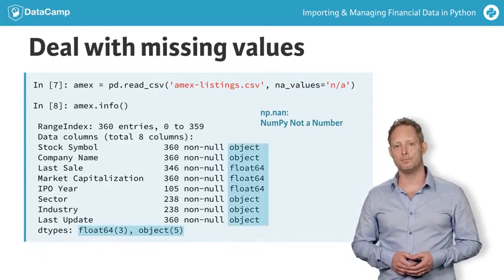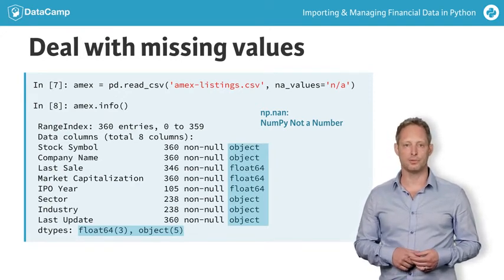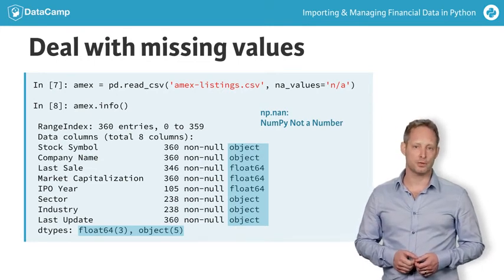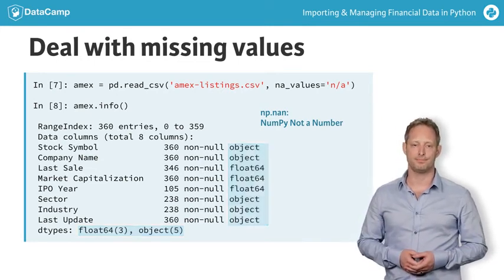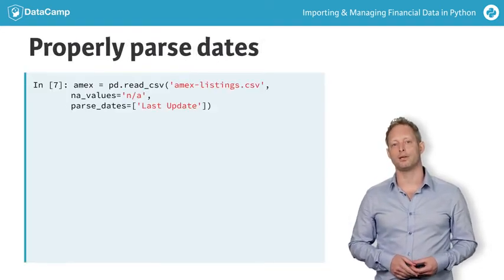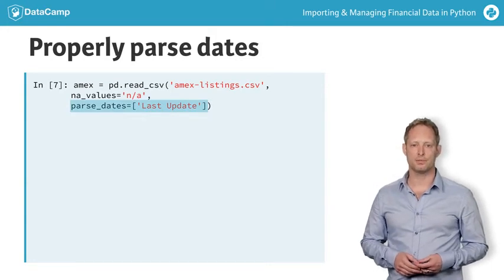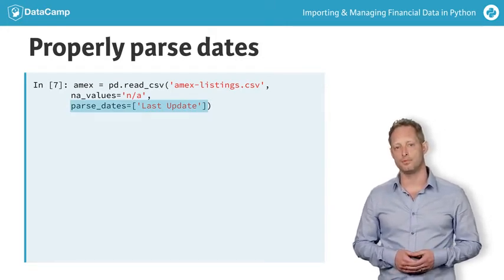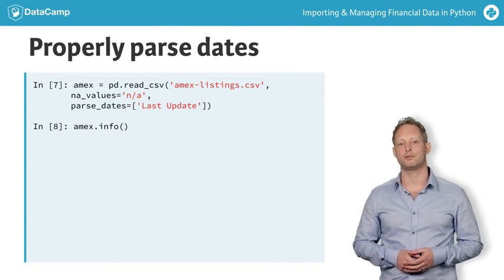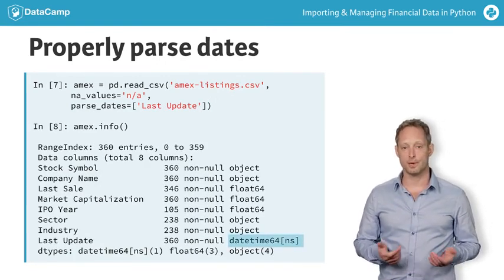The numeric columns now have the correct data types. The IPO year contains whole numbers, but is also assigned the data type float because values are missing for some companies. To parse the date information, use the parameter parse_dates and pass a list with the names of one or several columns with date information. Pandas will then interpret the data correctly, and now all columns have the expected data types.